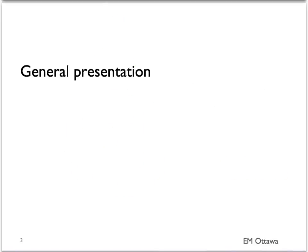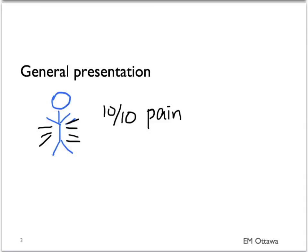We'll first talk about the presentation of the patient in a general sense, and then we'll move on to each specific cause. In general, the presentation will be abrupt and severe pain. In terms of the vital signs, patients can be tachycardic, and depending on their course of illness might be hypotensive.